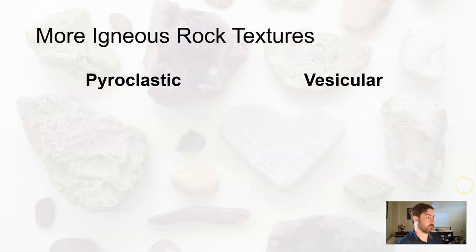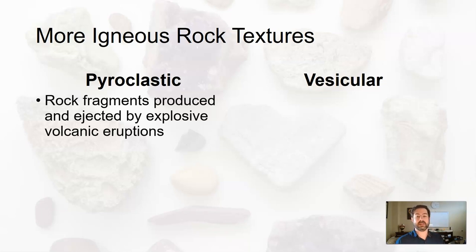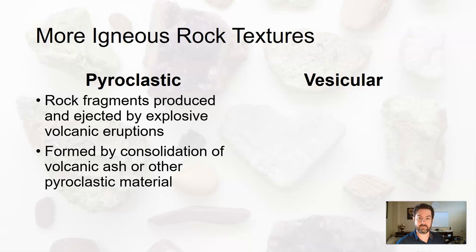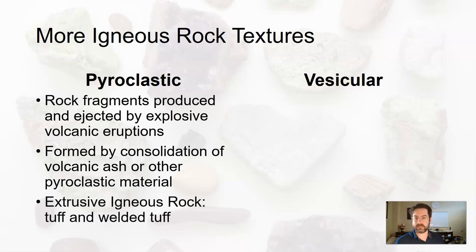Now some more igneous rock textures. We have pyroclastic textured igneous rocks. This is when rock fragments produced and ejected by explosive volcanic eruptions rain down and are consolidated and squished together. It can be ash that has settled or larger pieces of rock and material exploded out of a volcano. Examples include tuff, welded tuff, and volcanic breccia. It's an extrusive igneous rock.